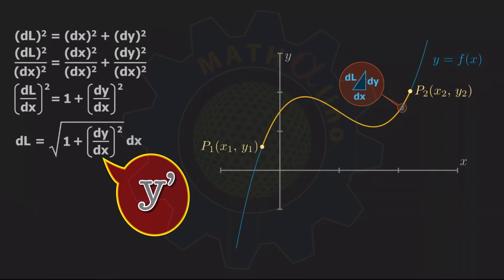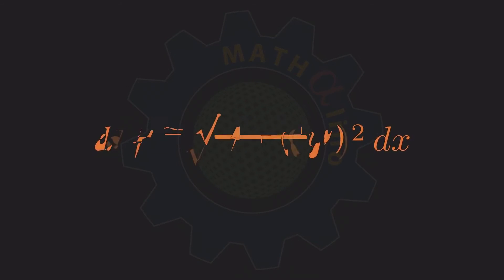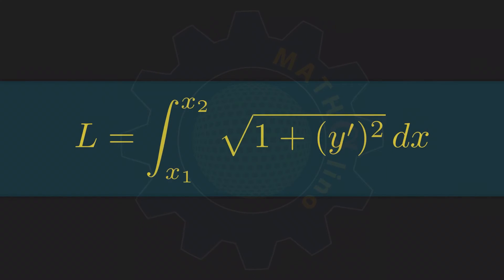Note that we can write y prime for dy over dx. They are the same thing. And for the total length of arc from point 1 to point 2, integrate or sum up all dLs within these two points. And because our differential element is in dx, our limits of integration are from the abscissas of points 1 and 2, which means that our limits start from x1 to x2. And this is our formula.